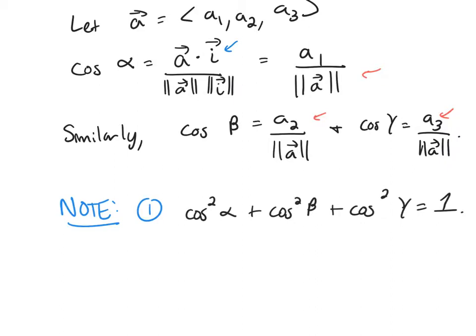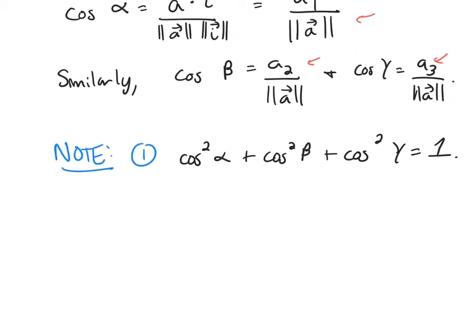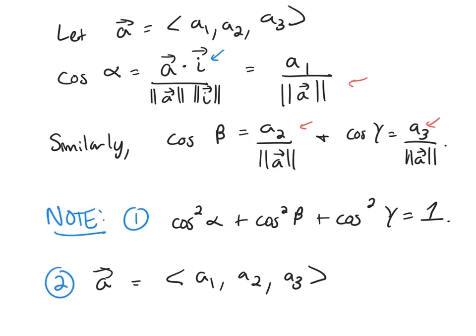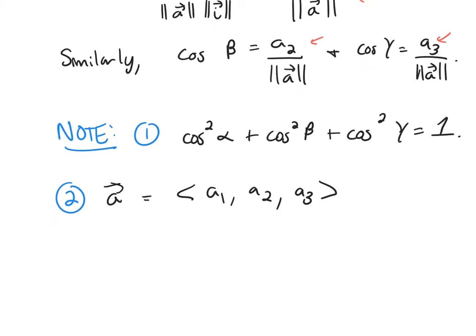And then the second thing I want to mention here is for this vector A, which again has component form A1, A2, A3, if you take those three equations and you solve for A1, A2, and A3, you would get that A1 is the magnitude of A cosine alpha, A2 is the magnitude of A cosine beta, and A3 would be the magnitude of A cosine gamma.